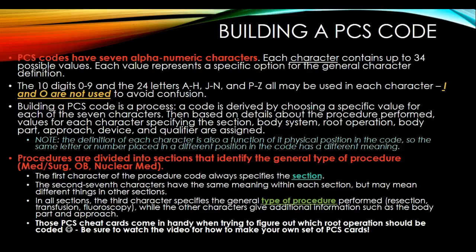Building a PCS code is a process. A code is derived by choosing a specific value for each of the seven characters based on details about the procedure that's performed. The values for each character specify the section, body system, root operation, body part, approach, device, and qualifier.